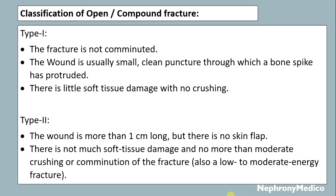Type 1: the fracture is not contaminated, the wound is usually small, clean, punctured through with a bone spike protrusion, and there is little soft tissue damage with no crushing. Type 2: the wound is not more than 1 centimeter long, there is no skin flap, and there is not much soft tissue damage.